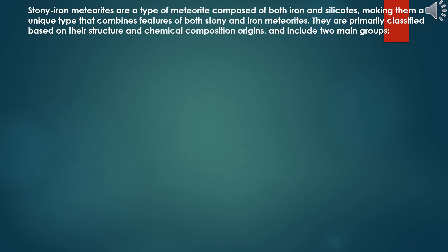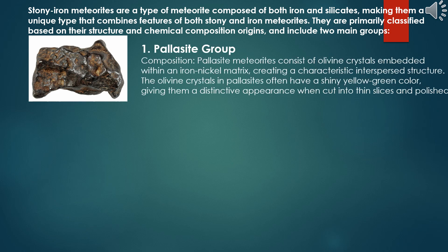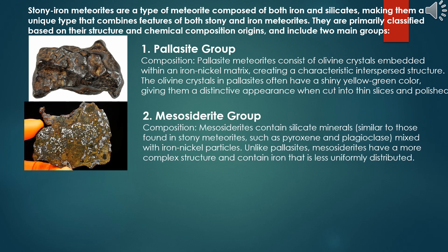Stony iron meteorites are a type of meteorite composed of both iron and silicates, making them a unique type that combines features of both stony and iron meteorites. They are primarily classified based on their structure and chemical composition and include two main groups. 1. Pallasite group: pallasite meteorites consist of olivine crystals embedded within an iron-nickel matrix, creating a characteristic interspersed structure. The olivine crystals in pallasites often have a shiny yellow-green color, giving them a distinctive appearance when cut into thin slices and polished.